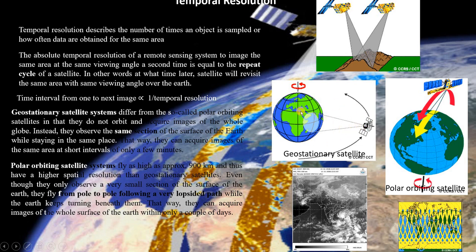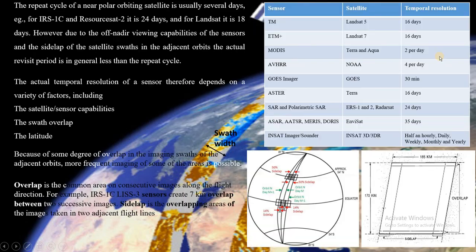In the case of geostationary satellites, they will not cover the whole globe since they are fixed at one particular location in space and continuously see the same area on earth. If you see this table, I have mentioned some basic and famous satellites and their temporal resolutions. For example, Landsat 5 and Landsat 7 have a temporal resolution of 16 days — meaning if you take Landsat data for a particular region, after 16 days you will get the next data for that region.